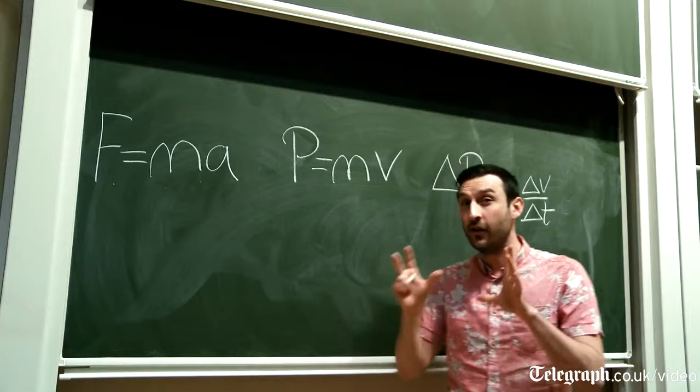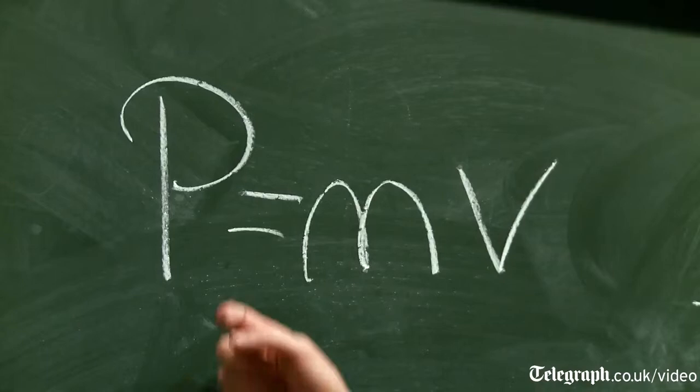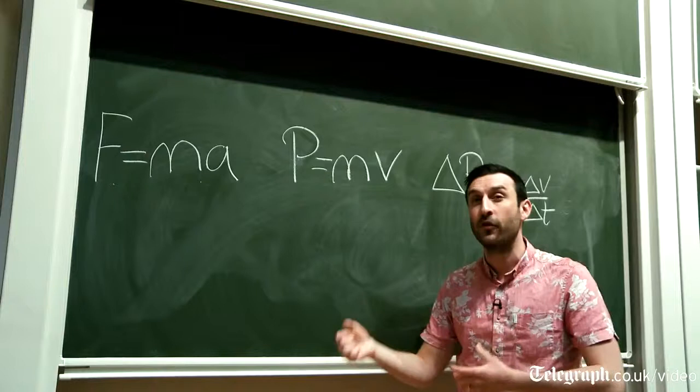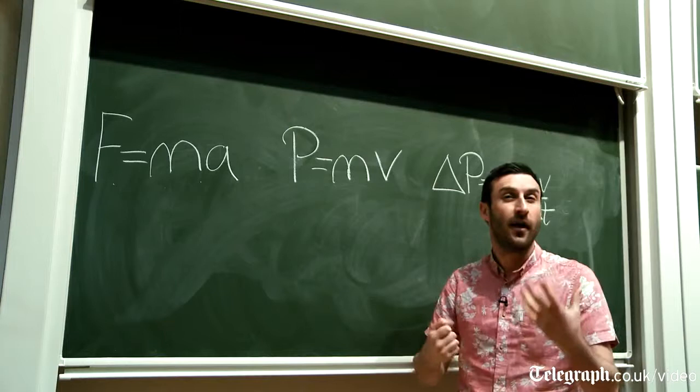The next equation is something you might not be familiar with, and that's the equation for momentum, which equals mass times velocity. Momentum is a quantity that can be passed from one object to another object when they interact, when they come into contact.